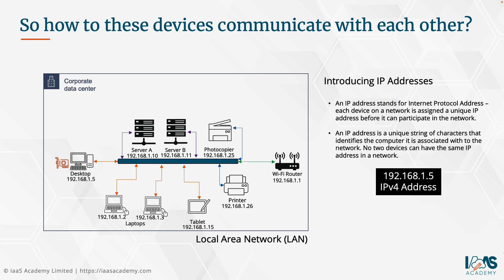An example of an IP address is 192.168.1.5, which is the IP address of that desktop computer. This is what we call an IPv4 address, a version 4 address. These addresses have existed for a number of years. The important aspect here is that each and every device in a given network will have a unique IP address, and it is by means of that IP addressing that communication can take place. If this desktop computer wants to access an application on server A, it needs to know the IP address of server A in order to send that request.